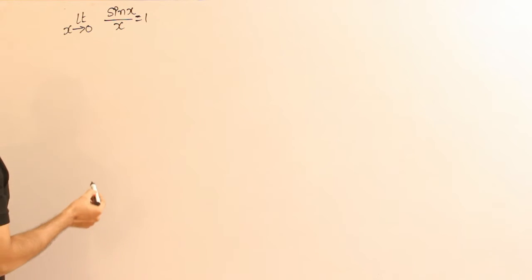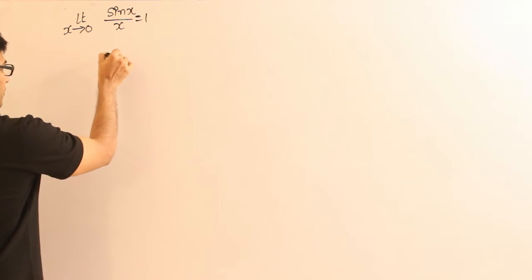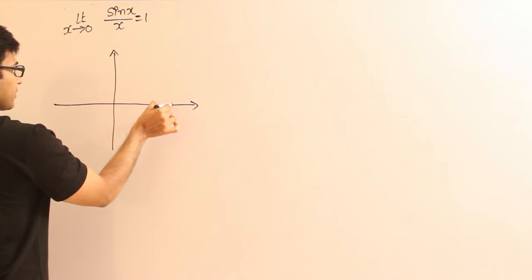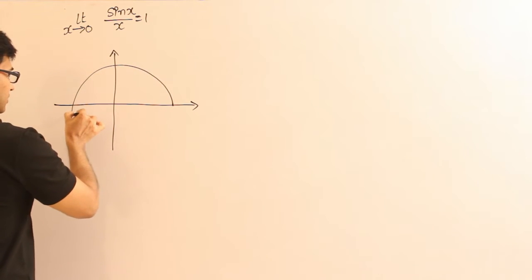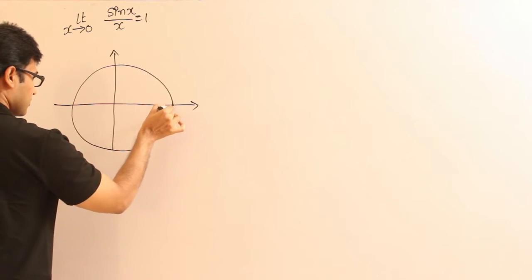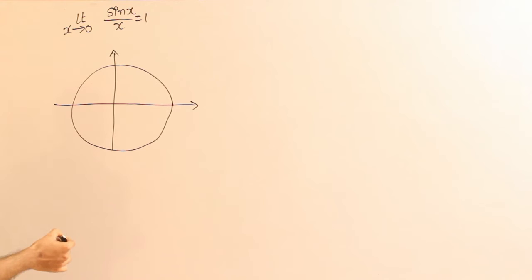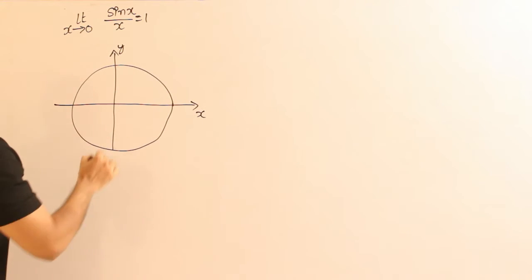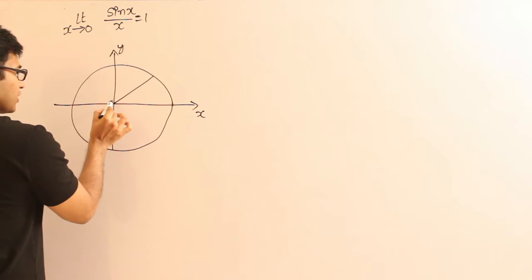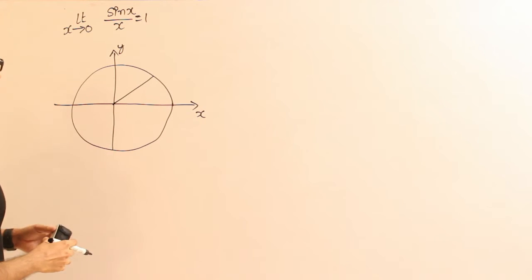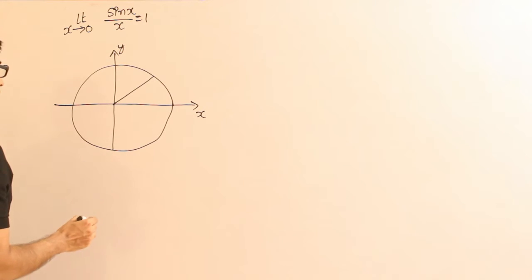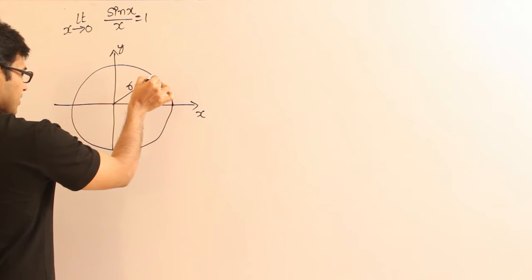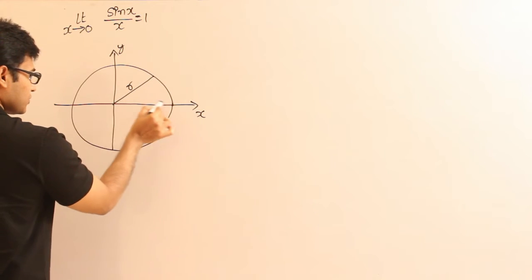Assume that we have an x-axis and y-axis. Let us say this is a circle having its center at the origin. There is a line segment starting at the origin and ending at the perimeter of the circle — this length will be R, the radius. From here, let us connect another line — this is also another radius R.